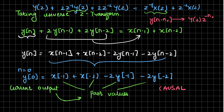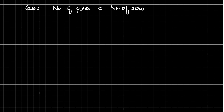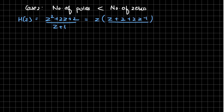Now consider Case 2 where the number of poles is less than the number of zeros. For this we consider the inverted example: H(Z) equals (Z²+2Z+2) divided by (Z+1). Taking Z common from numerator and denominator gives (Z + 2 + 2Z⁻¹) divided by (1 + Z⁻¹), multiplied by Z, simplifying to (Z + 2 + 2Z⁻¹) divided by (1 + Z⁻¹).